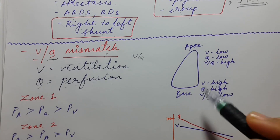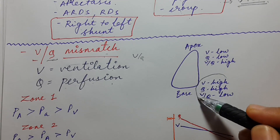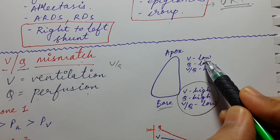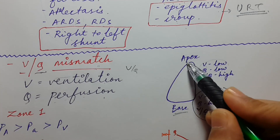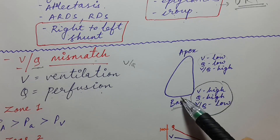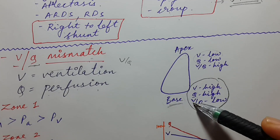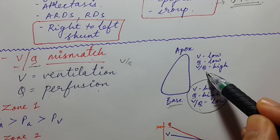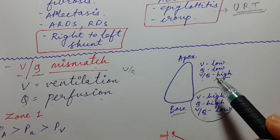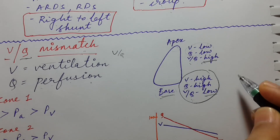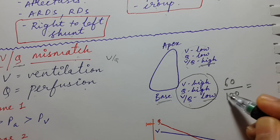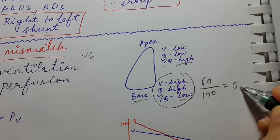Many students get confused here. Both ventilation and perfusion are high at the base and low at the apex. But the ventilation-to-perfusion ratio is low at the base and high at the apex. For example, if ventilation at the base is 60 and perfusion is 100, the VQ ratio is 60 divided by 100, which is 0.6.